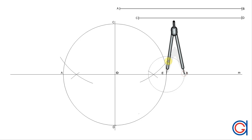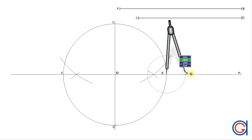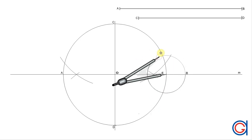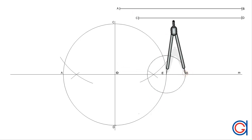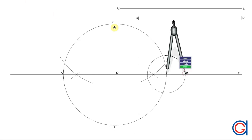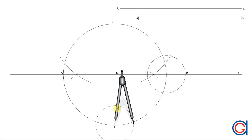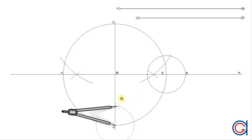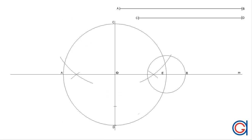The next step is setting our compass on point E and with radius EB, we are going to draw another small circle. With the same radius and set on point D, we are going to mark a new point on the minor axis, which we will call F, as can be seen here.